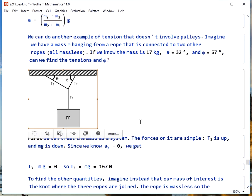First, the mass can be our system. The forces on it are pretty simple. We've got T3 up and mg down. Since it's not moving, it's just hanging there in space. Its acceleration is 0, so we know T3 minus mg must equal 0, or T3 equals mg, which is about 167 newtons.